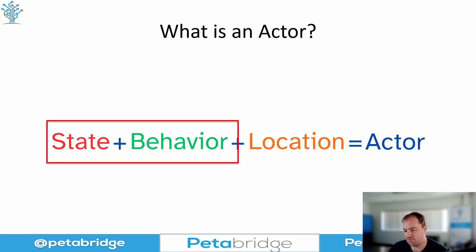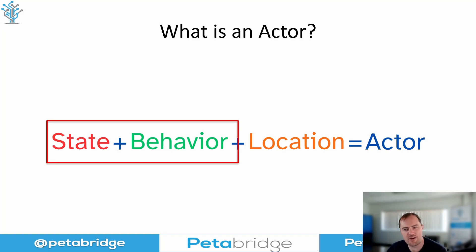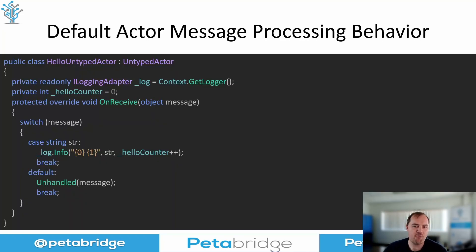An actor is really composed of three elements: state, behavior, and location. Location refers to things like distributed systems of actors — where an actor is on the actor hierarchy and which process it's inside of. If you want to learn more about that, check out some of our videos on Akka.Cluster. But for now we're going to focus on state and behavior.